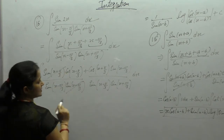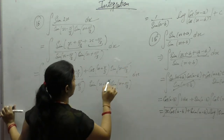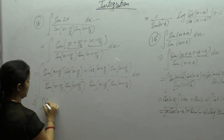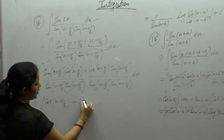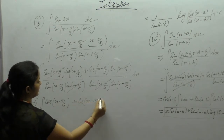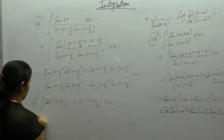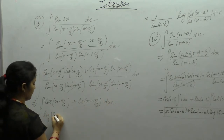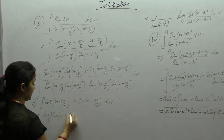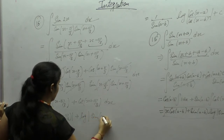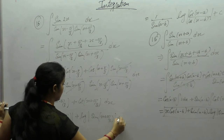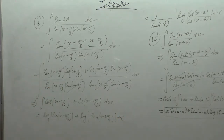sin(x + π/3) cancels, leaving cot(x - π/3). Cos upon sin is cot, giving cot(x - π/3) + cot(x + π/3). The integral of cot is log|sin x|, so we get log|sin(x - π/3)| + log|sin(x + π/3)| + C.